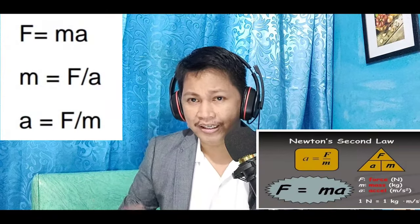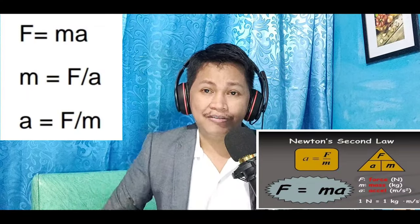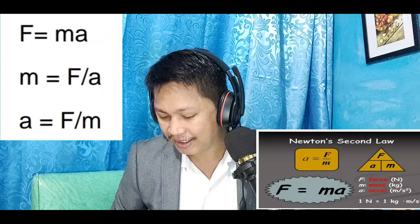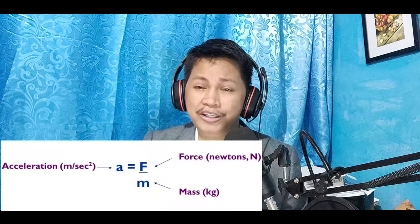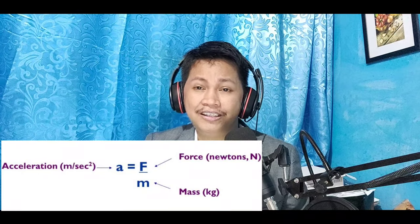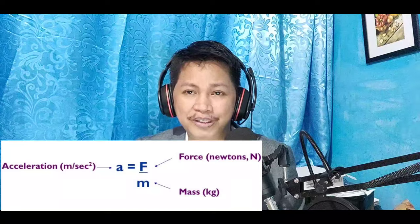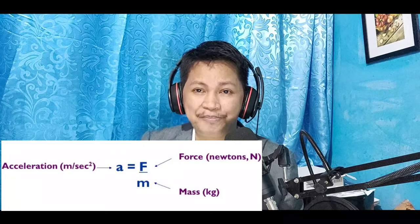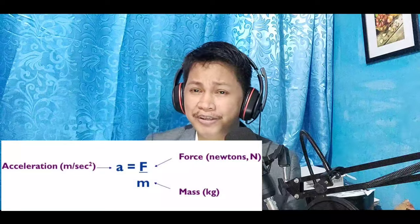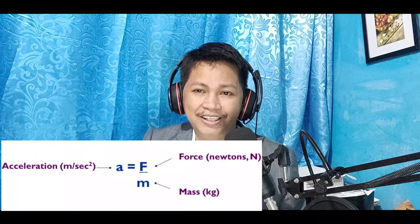There are formulas to be used for finding force, mass, and acceleration. To find force, multiply mass times acceleration: F = ma. To find acceleration, divide force by mass: a = F/m. To find mass, divide force by acceleration: m = F/a. Each quantity has its own unit of measurement: force is expressed in newtons (capital N), acceleration in meters per second squared (m/s²), and mass in kilograms (kg).